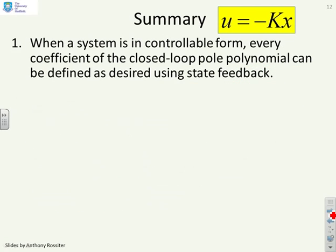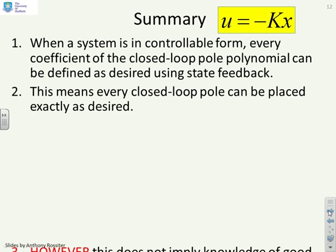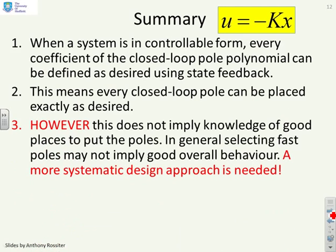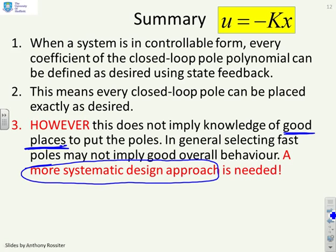In summary, when a system is in controllable form, every coefficient of the closed loop pole polynomial can be defined as desired using state feedback. You can put the poles wherever you want. But this is not the same as knowing a good place to put the poles. And in general, selecting fast poles may not imply good overall behavior. So we need a more systematic design approach. We've shown you how to do pole placement, but we haven't shown you how to choose target pole positions, and that's a key issue.